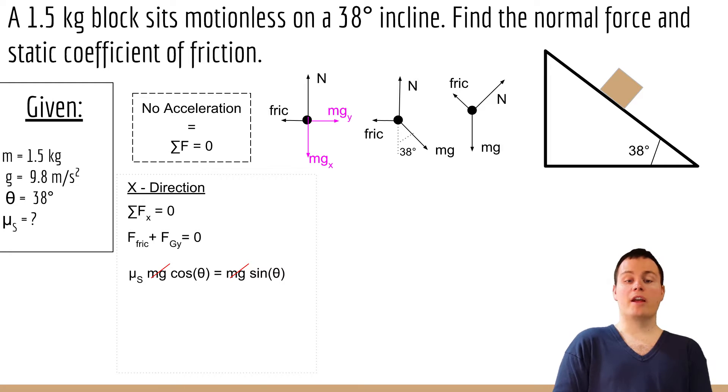You'll notice both of those have mass times gravity in there so we can cancel that out and then solve for the coefficient of friction which is equal to sine divided by cosine.